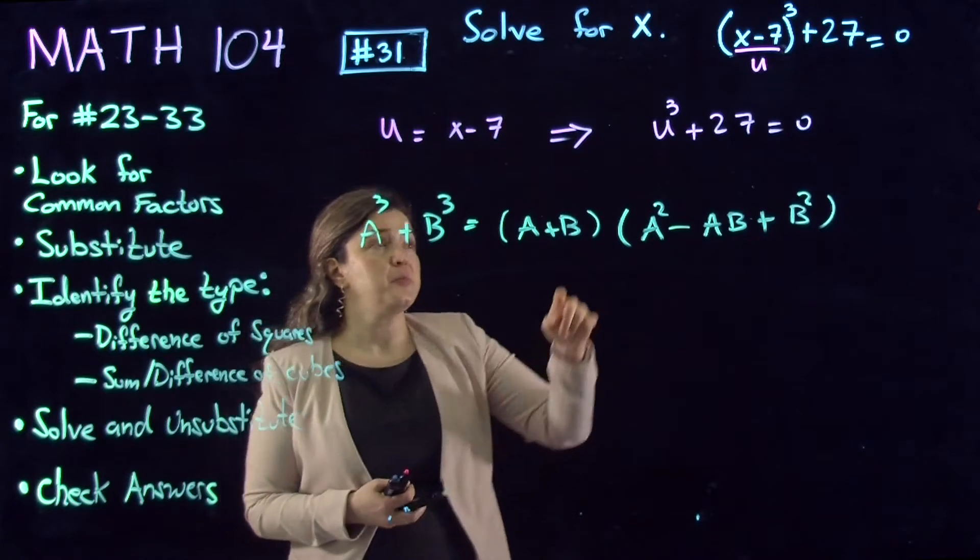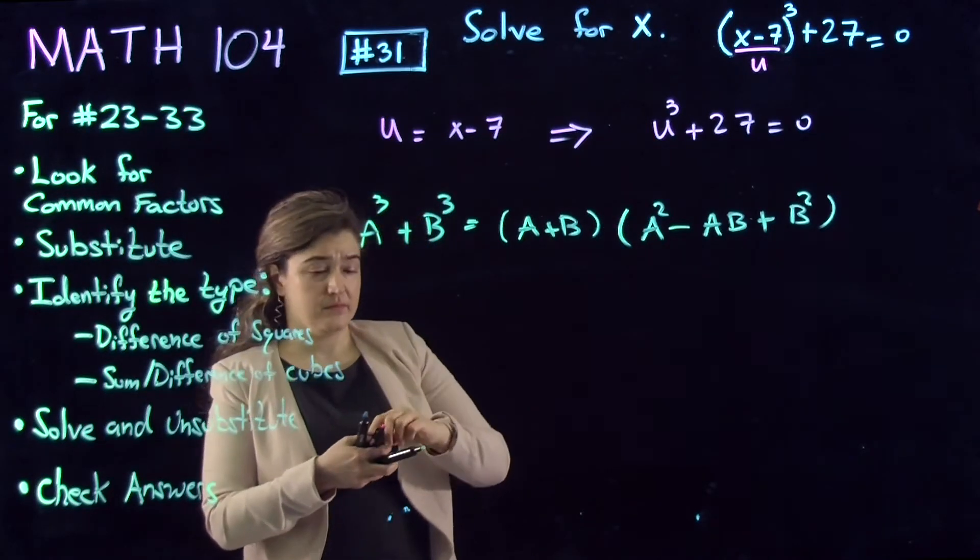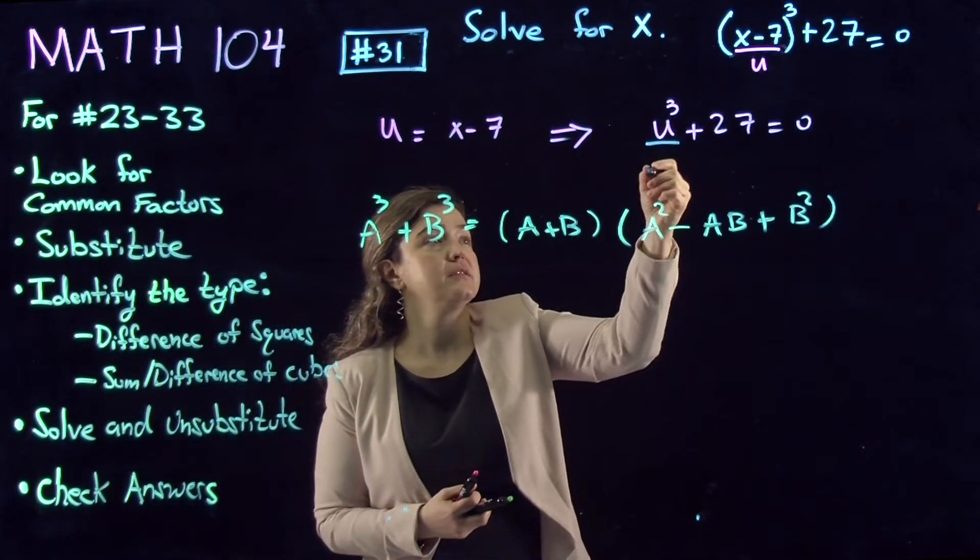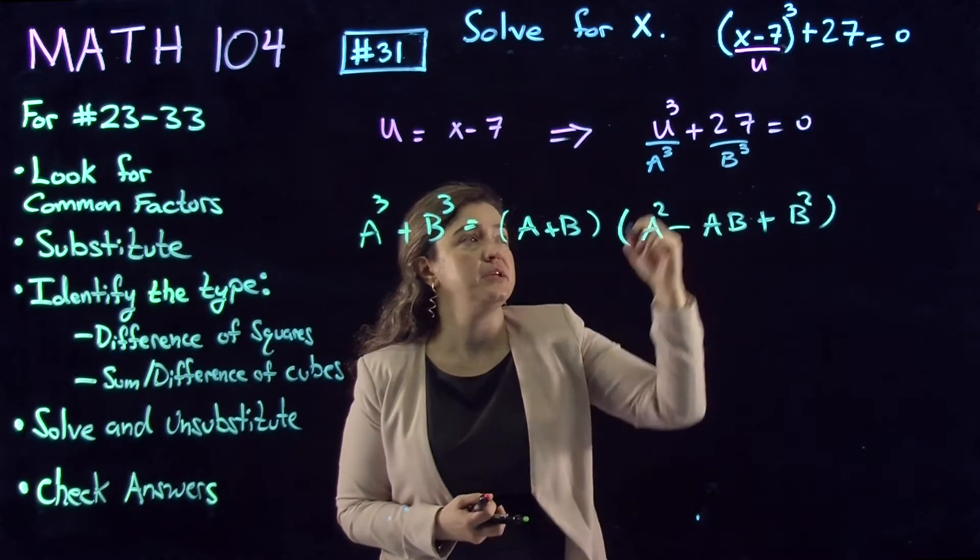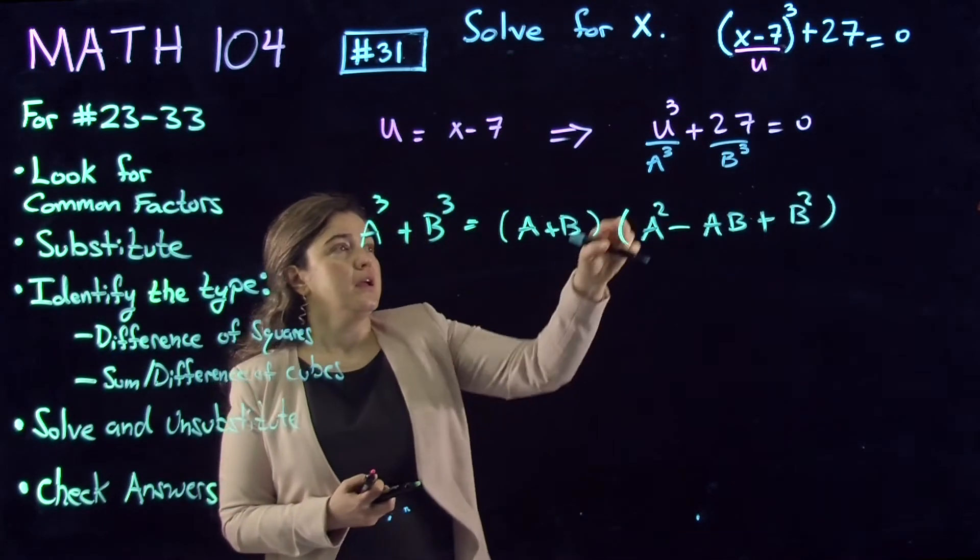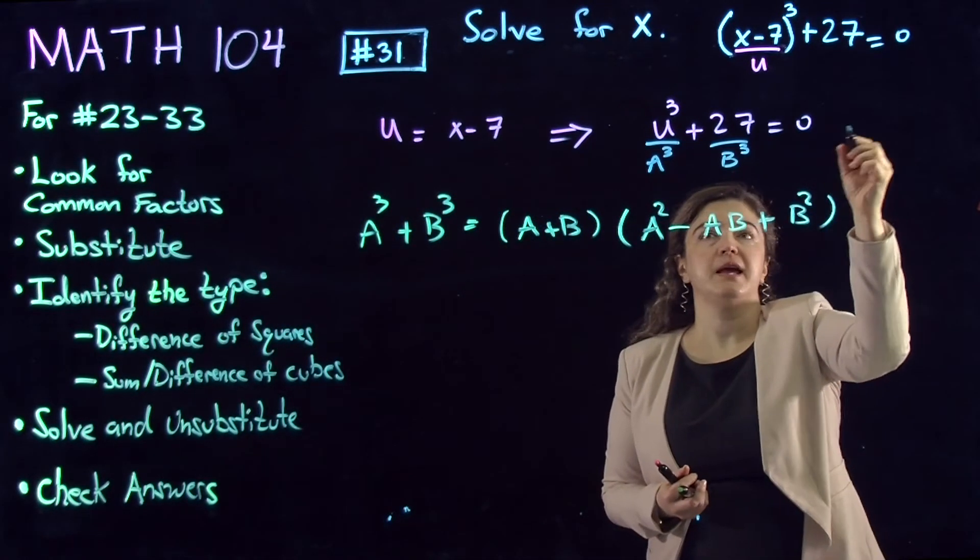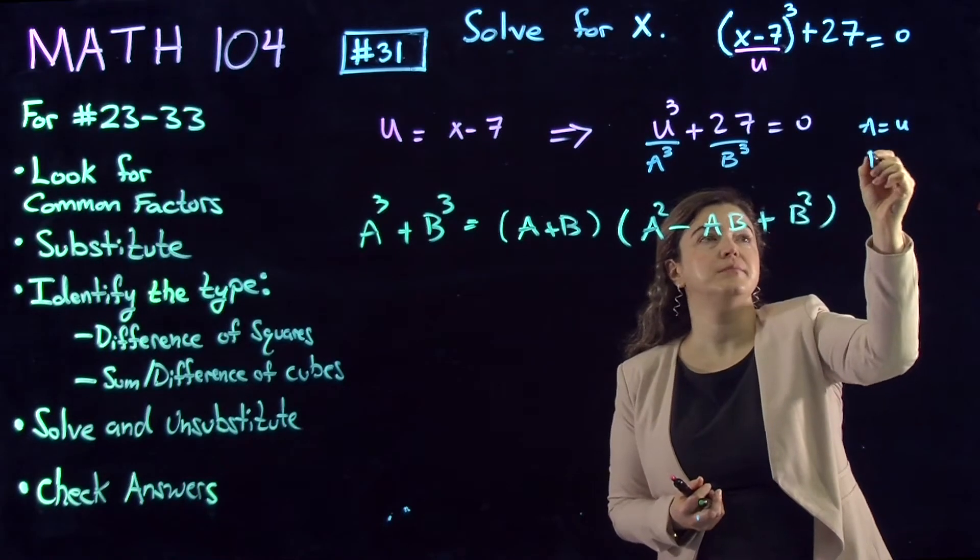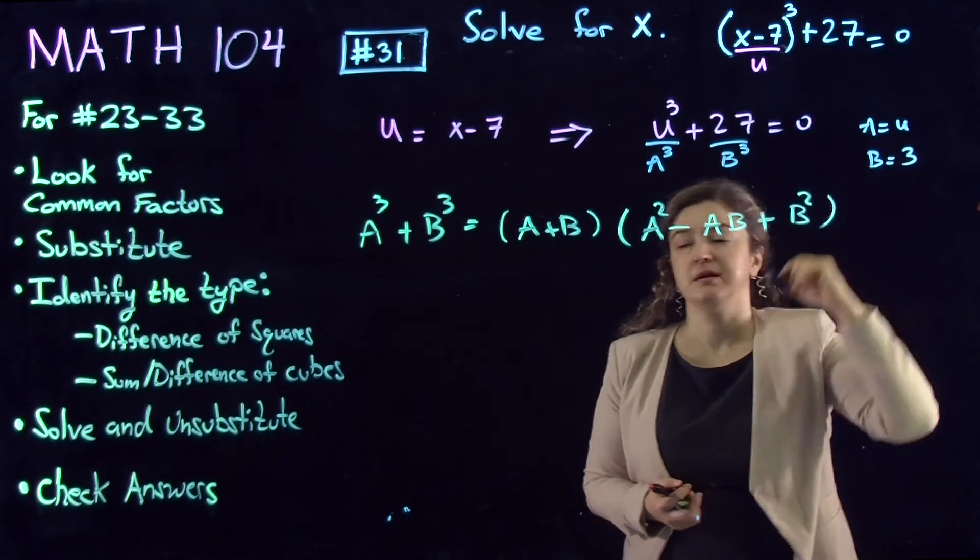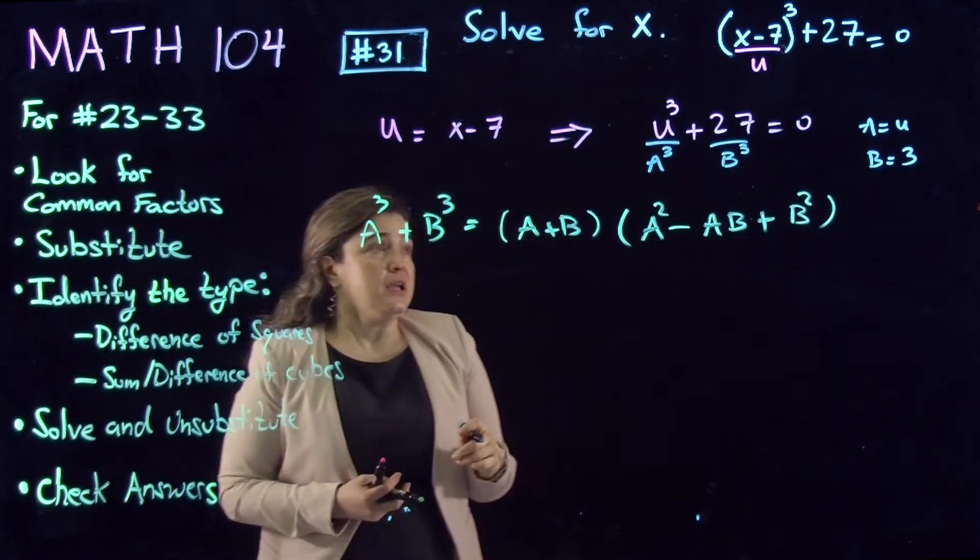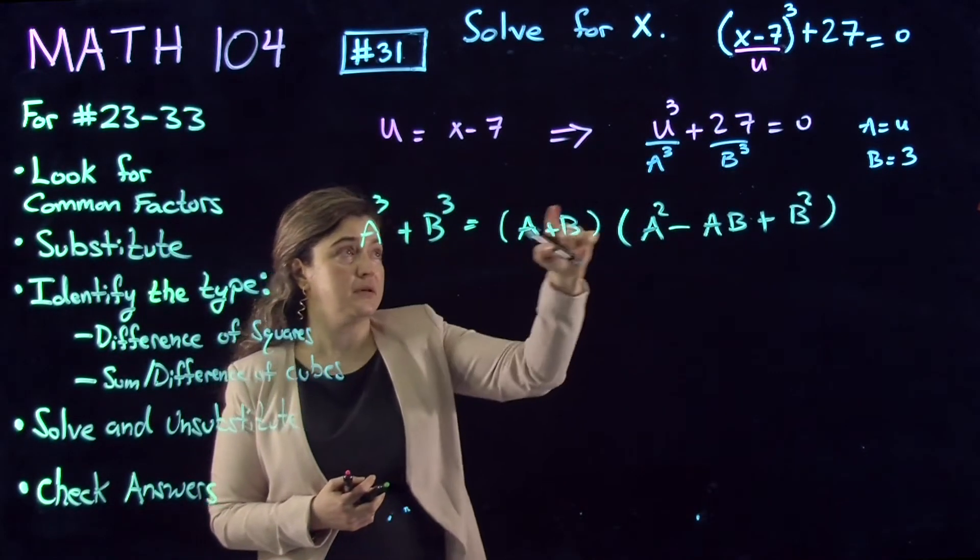Now it remains to figure out what is a and what is b. In here, this is a³ and this is b³. Let's solve for a: a has to be u, and b has to be the third root of 27 which is 3.